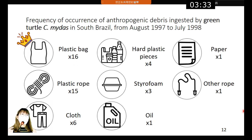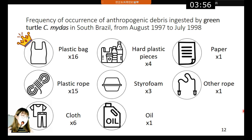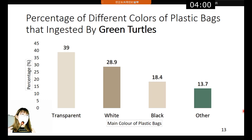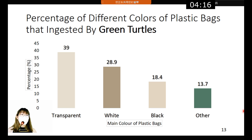Now let's focus on the frequency of occurrence of anthropogenic debris ingested by green turtles. There are 8 sections of debris shown in the slide, and it is clear that plastic bags have the highest frequency of occurrence among those debris types. Analyzing the percentage of different plastic bag colors, the x-axis represents the main color of plastic bags and the y-axis represents the percentage. Transparent and white plastic bags have a higher frequency than black and other colors.